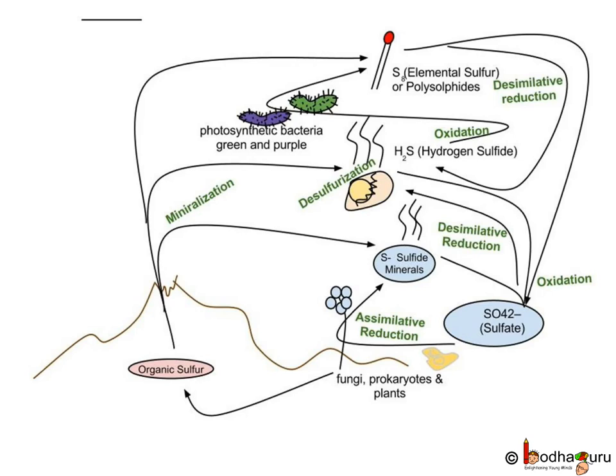As we already know, microbes break down complex organic compounds into simple compounds and release carbon dioxide, ammonia, methane, etc. So, through this mineralization process, organic compounds turn into simple compounds or minerals which plants can use again. This means the supply of nutrients to the soil stays uninterrupted. Hence, microbes play an important role in making the soil fertile.